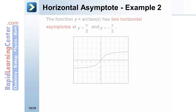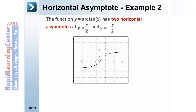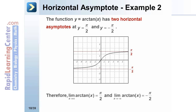Another example for horizontal asymptotes: the function y = arctan(x) has two horizontal asymptotes at y = π/2 and y = −π/2. You can see from the graph that it approaches but does not touch these two values as x approaches infinity and as x approaches negative infinity. Therefore, the limit as x approaches infinity is π/2 and the limit as x approaches negative infinity is −π/2.